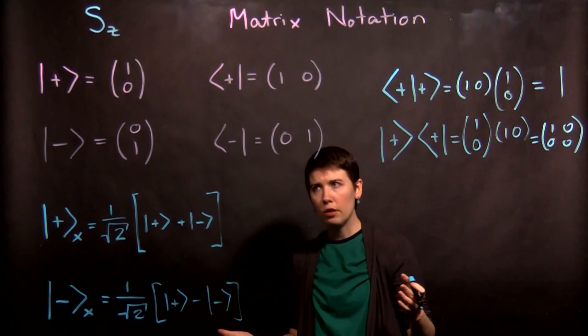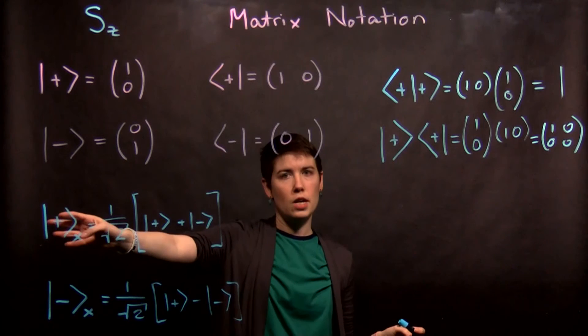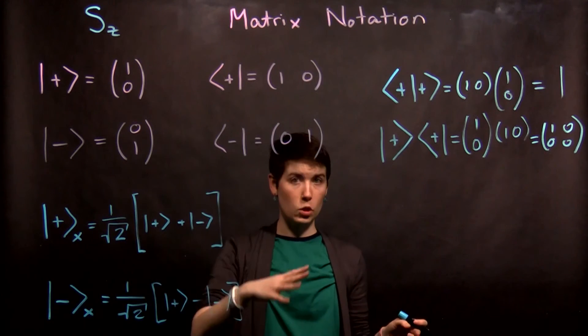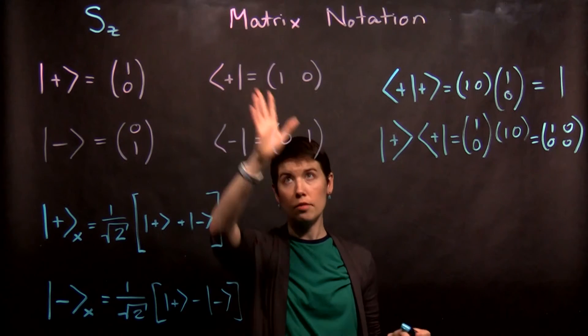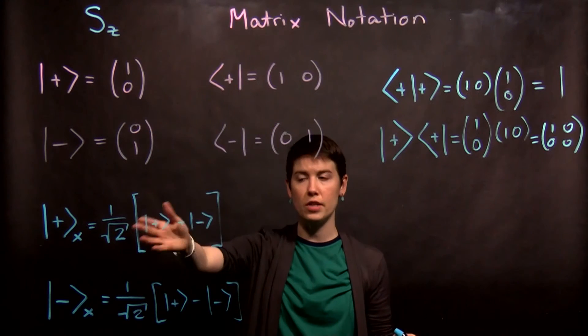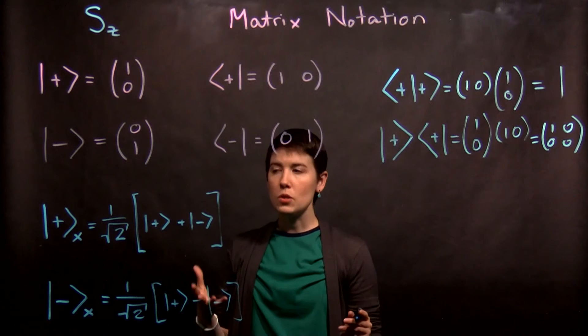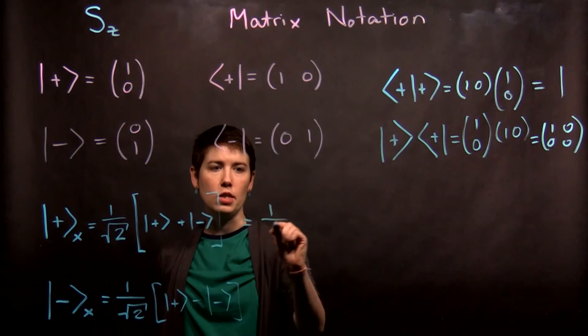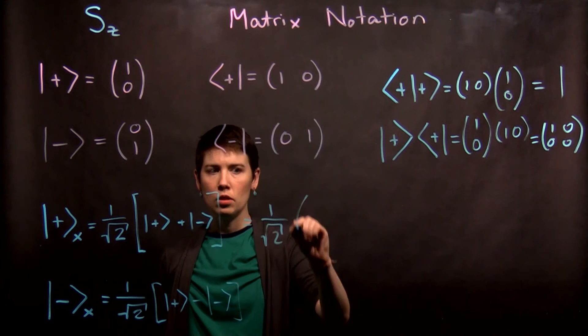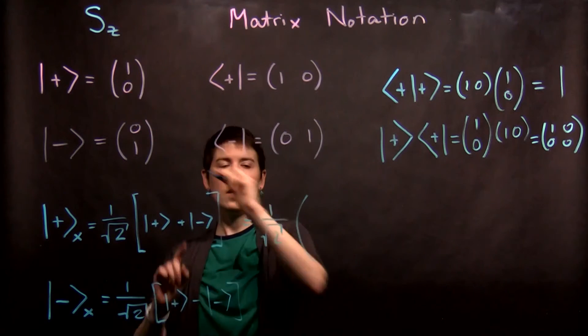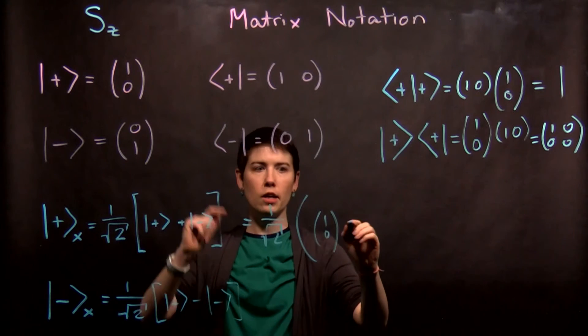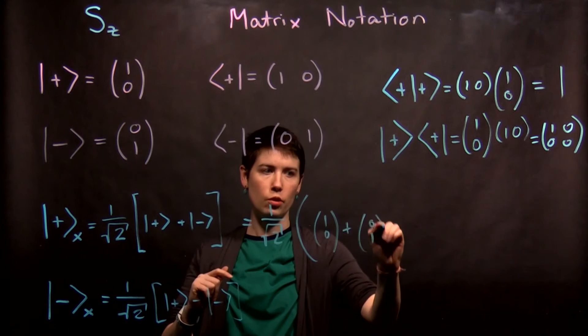So now, as one more example, let's go through taking our spin up and down in the x direction and re-expressing these as our vectors, our matrix notation, rather than just in the ket. So the first thing to notice is we have these normalized, and we can just bring that out front. And now I'm going to say, okay, what was spin up in x? Spin up is one, zero. And then spin down is zero, one.